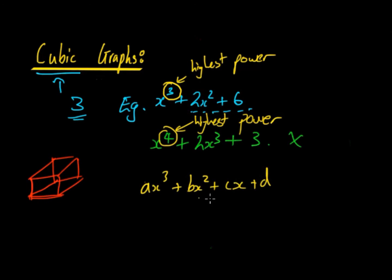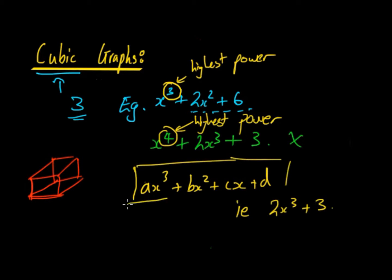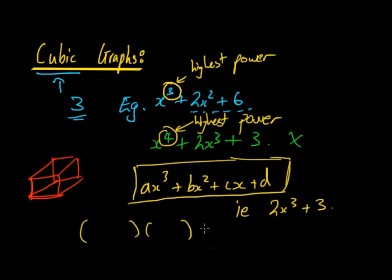However, the terms can equal zero. For example, 2x³ plus 3 is still a cubic function. You can represent cubic graphs in many other forms as well. Without a calculator it's hard to graph the general form, so you need to factorize it into forms that are easier to graph — for example, something like (x+2)(x−3)(2x+3).